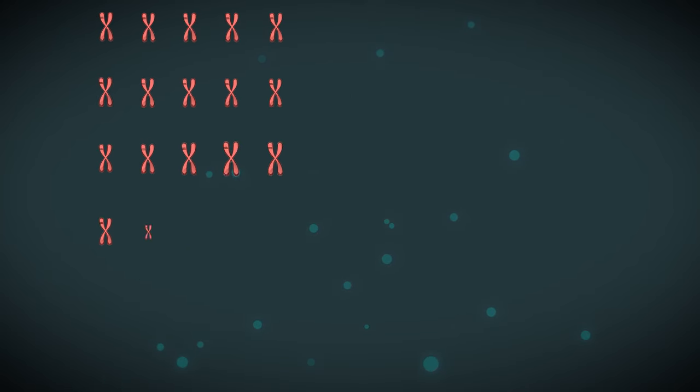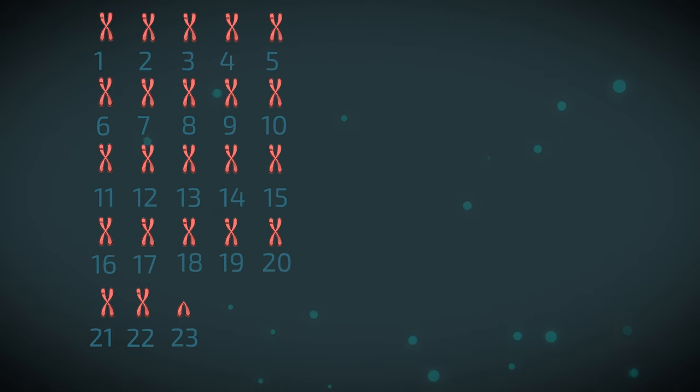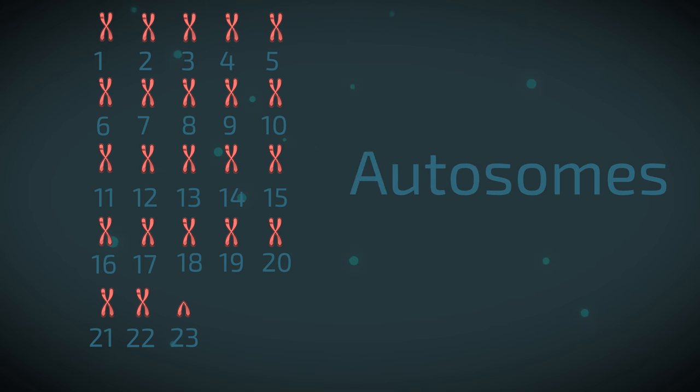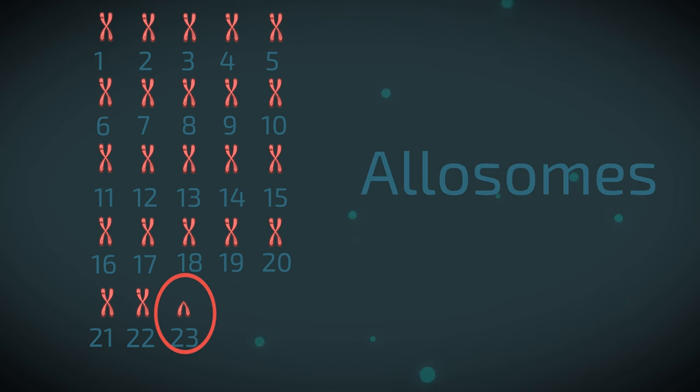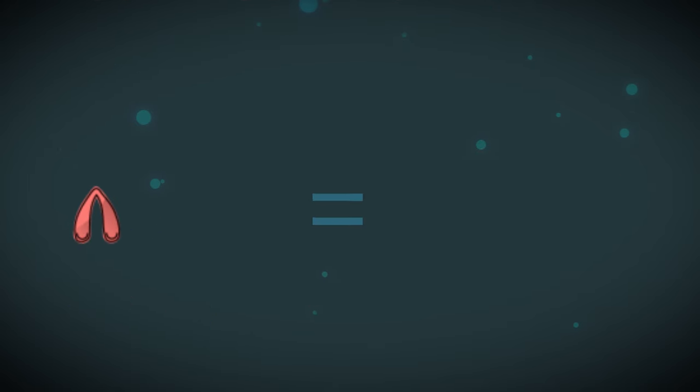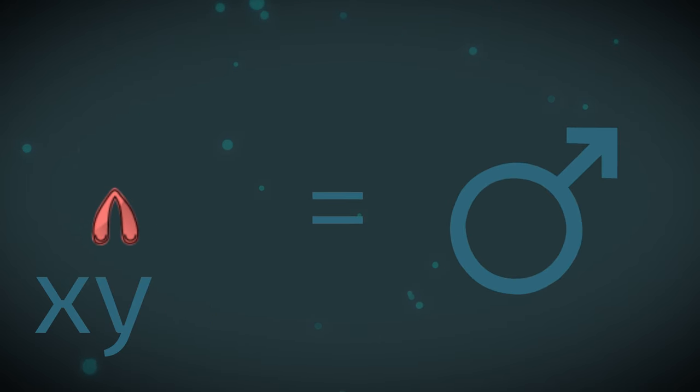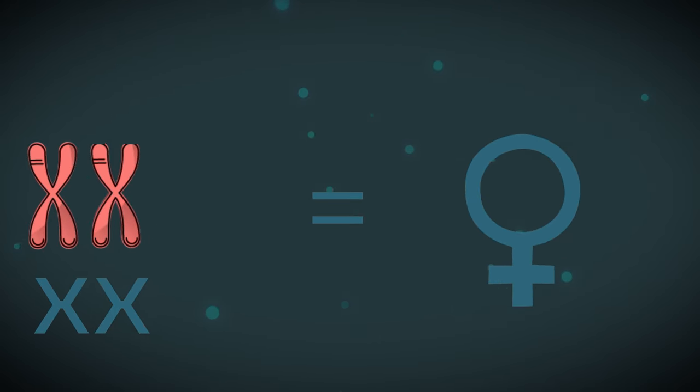Human body cells have 46 chromosomes arranged in 23 pairs. There are 22 pairs of autosomes and one pair of sex chromosomes or allosomes. For a male the sex chromosomes are usually XY whilst for a female they are XX.